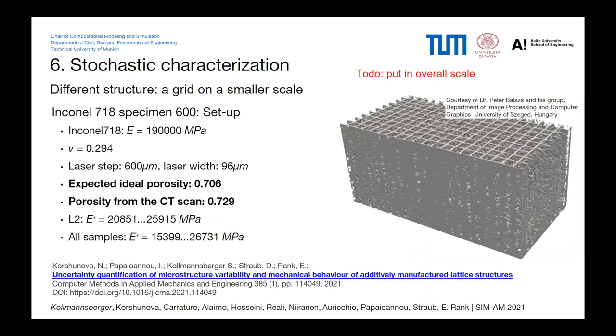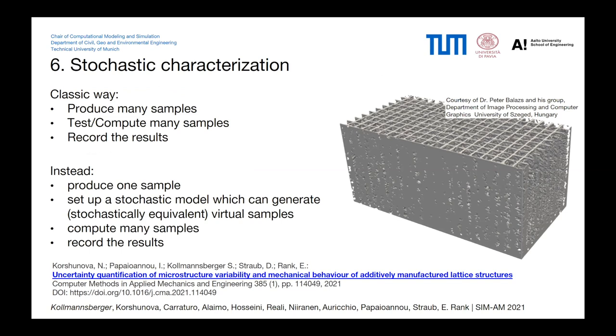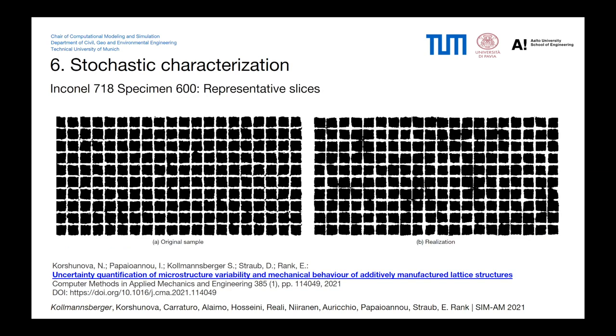Let's look at the stochastic characterization. So given all the possibilities of image-based analysis, we can then attempt to stochastically characterize these kind of structures. Because they have, of course, a large spread in the elastic modulus, which comes from also the geometric variations. So the classic way here is to produce many samples, to test and compute many samples, and then you record the results. Instead, what we wanted to do is to produce only one sample, then set up a stochastic model which can generate stochastically equivalent virtual samples. And then you could compute automatically with the finite cell method all these samples, record the results, and do some kind of a stochastic analysis that way.